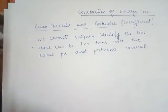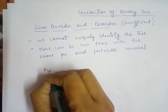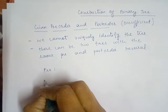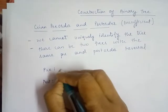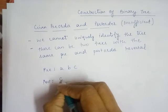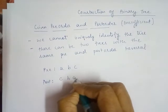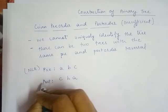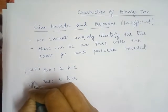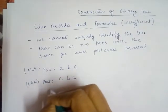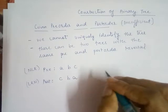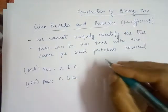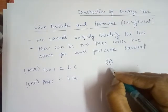I'll explain this point with the help of an example. If I take a small example: pre-order is given as A B C and post-order is given as C B A. As we know, pre-order means node-left-right and post-order means left-right-node. Using these two orders, we can construct more than one tree — we can construct two or more trees with the help of this information.